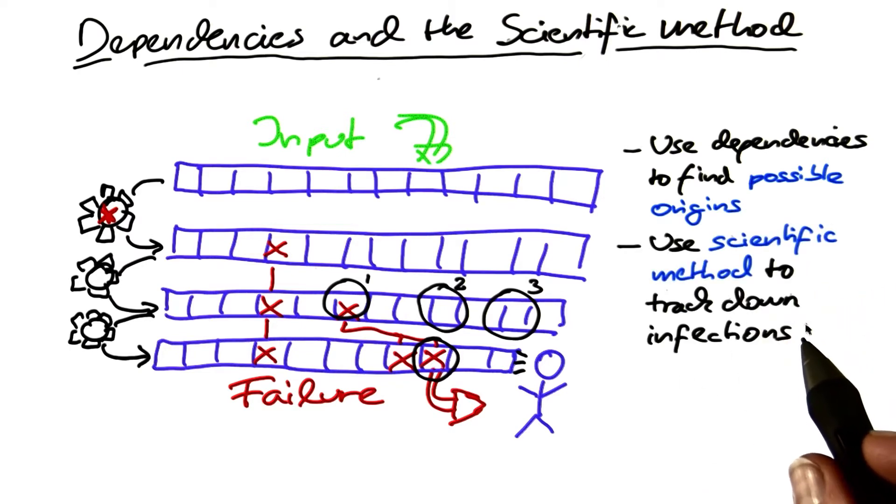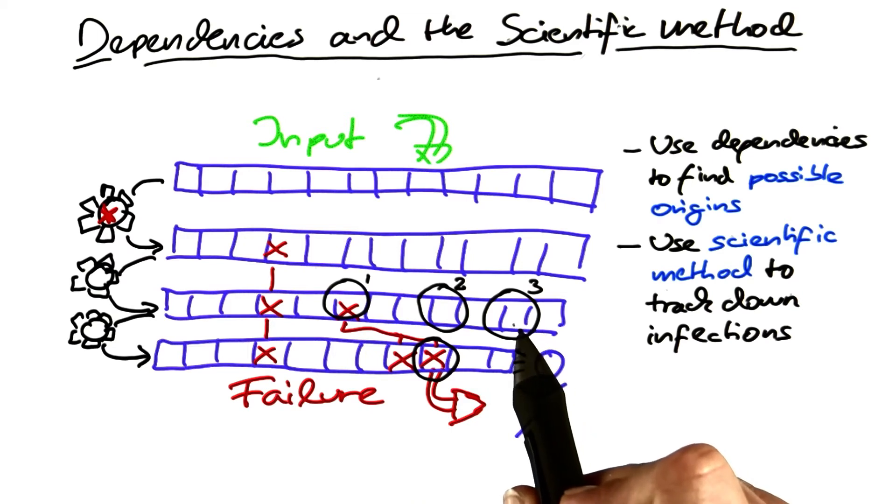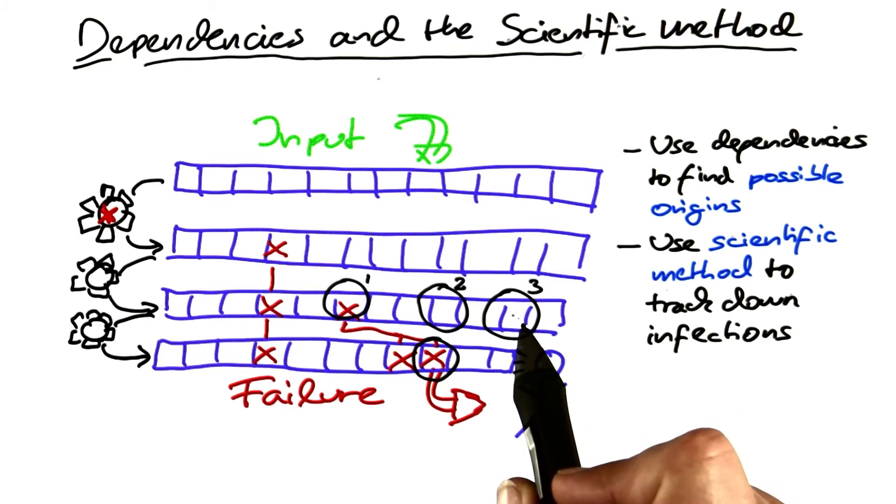In the second step, we use the scientific method to track down infections. We have the choice between three possible origins here. So we use the scientific method to find out which of these three parts of the state is at fault.